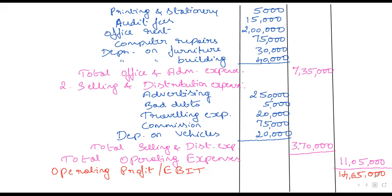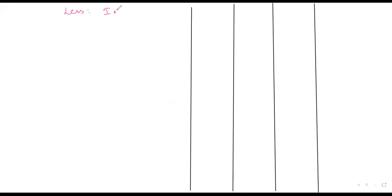This is EBIT — earnings before interest and tax. What is the 'I'? That is nothing but interest. So next we write: less interest. Interest given in the question is 50,000.